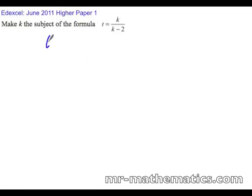We're going to rearrange this formula to make k the subject. The first thing we need to do is to get rid of the denominator k minus 2 by multiplying both sides by k minus 2.